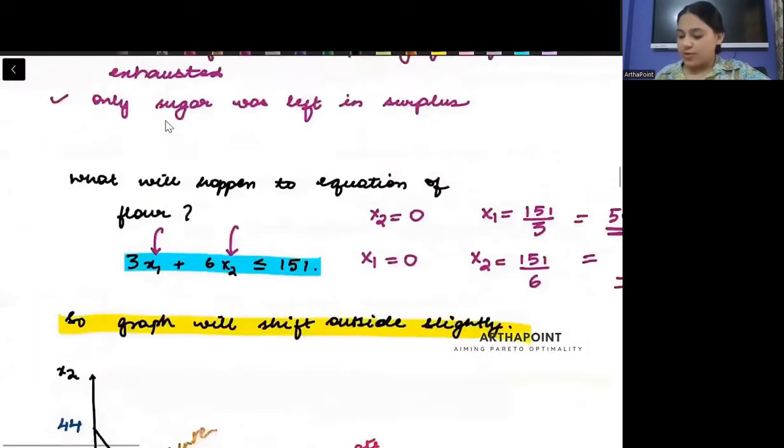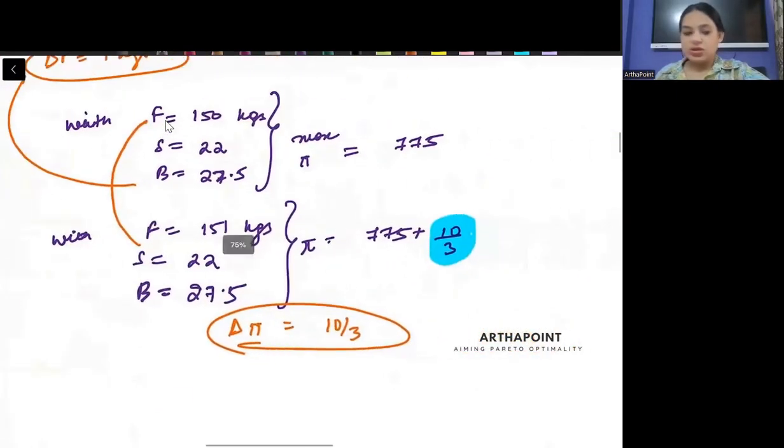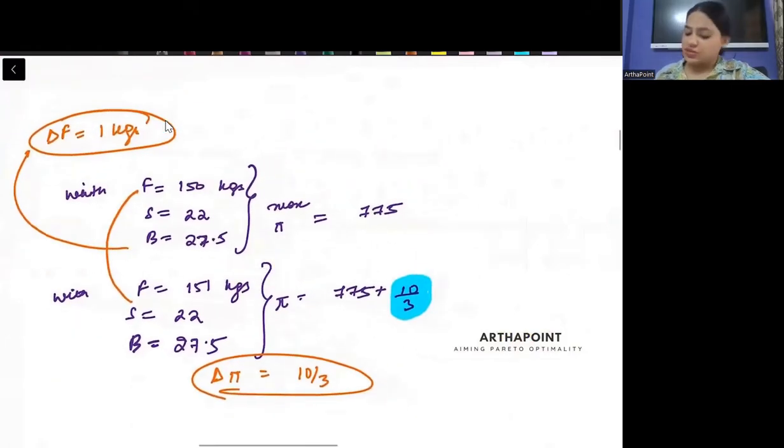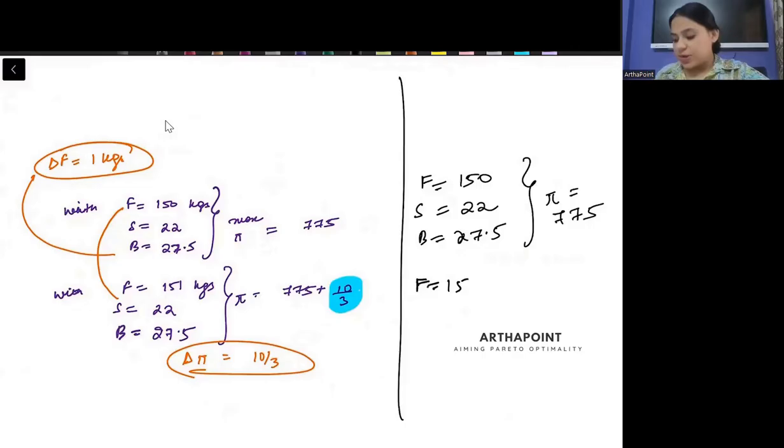Again, let's try to see what has happened. Now, what I am saying is the following. When my flour was 150, my sugar was 22 and butter was 27.5, the maximum profit I was making was 7.75. Now, when my flour is 150, sugar is 22, but butter is 28.5, when I increase butter by 1 unit, then my new profit is 7.85.